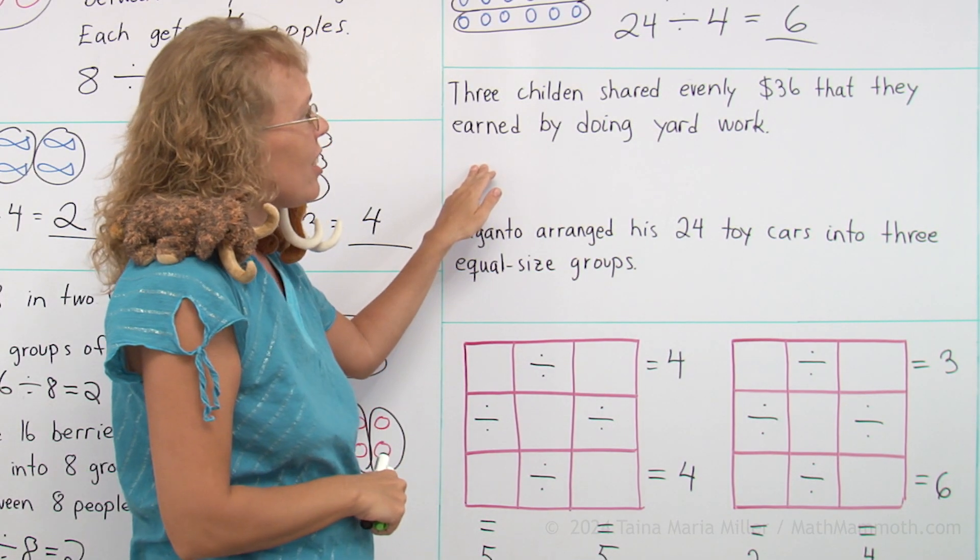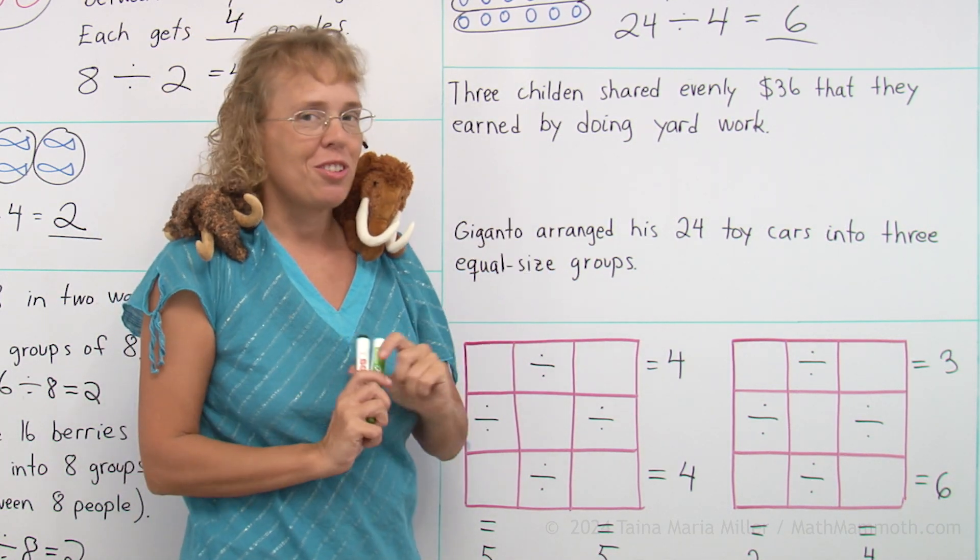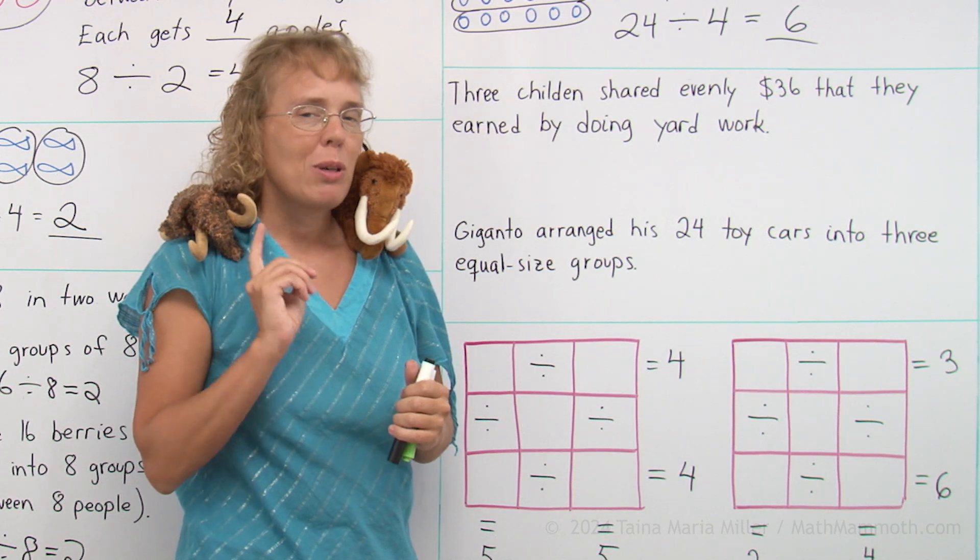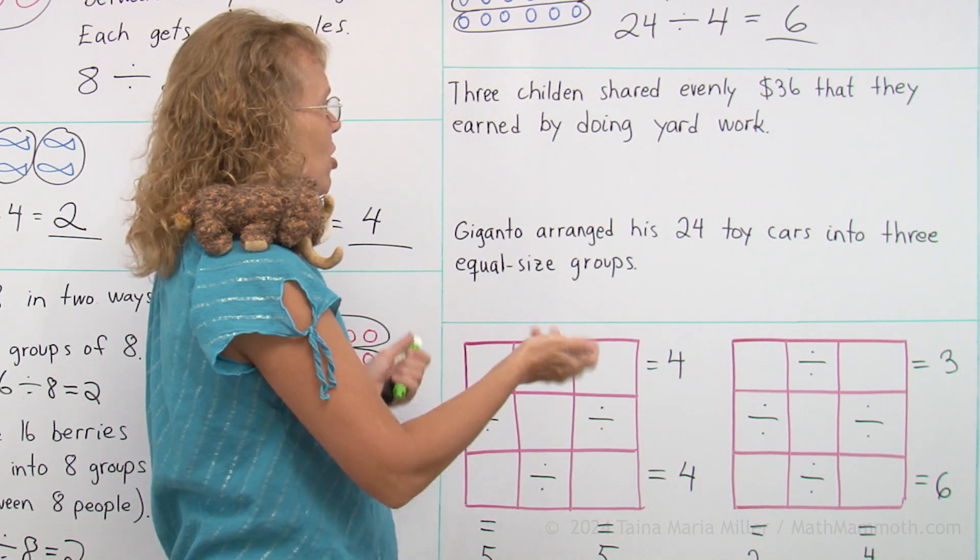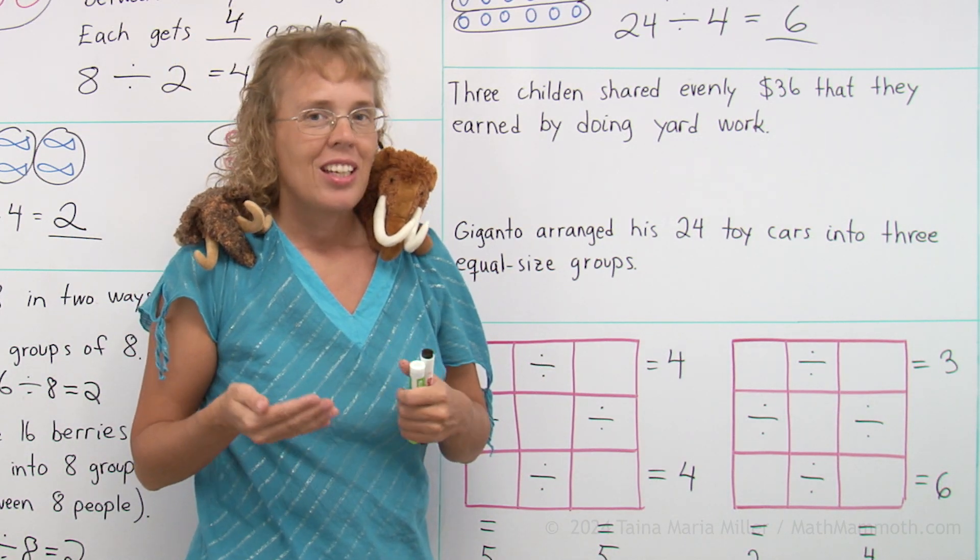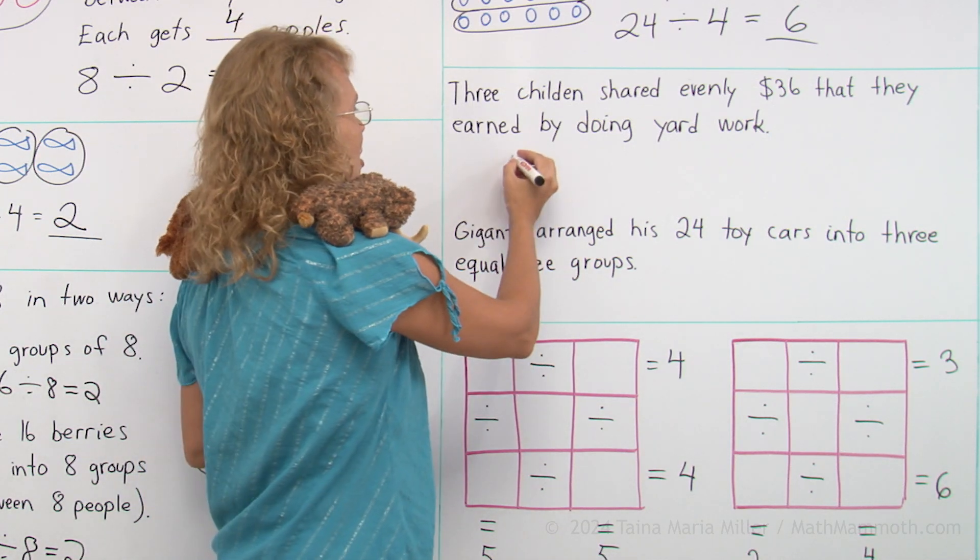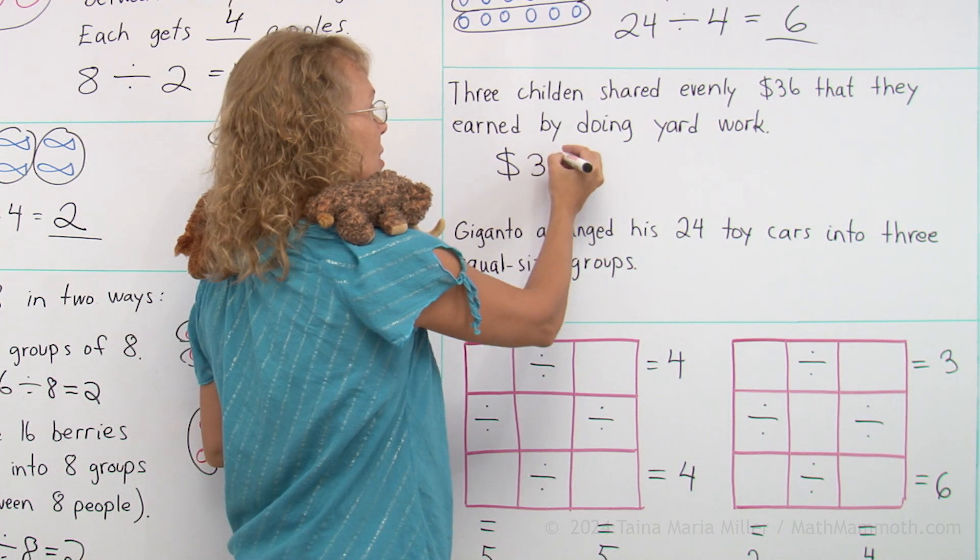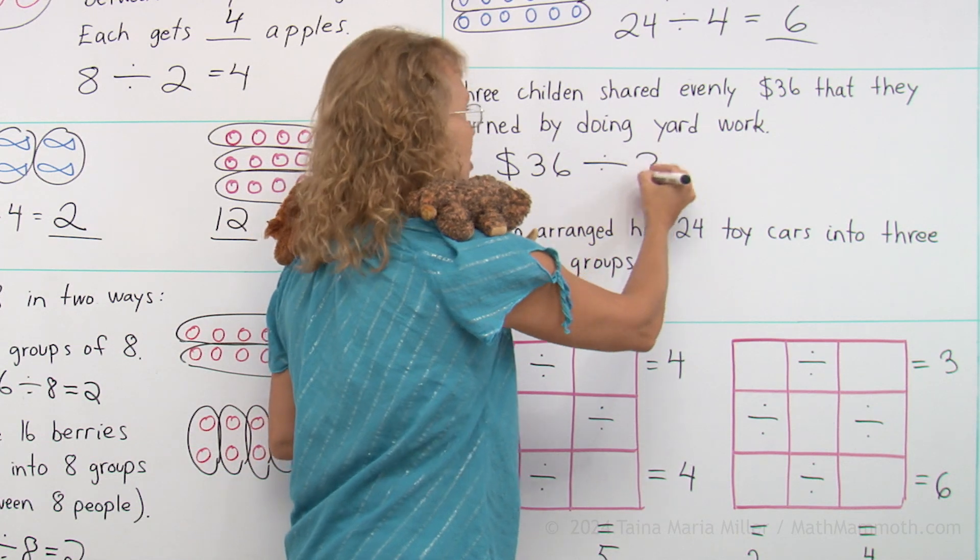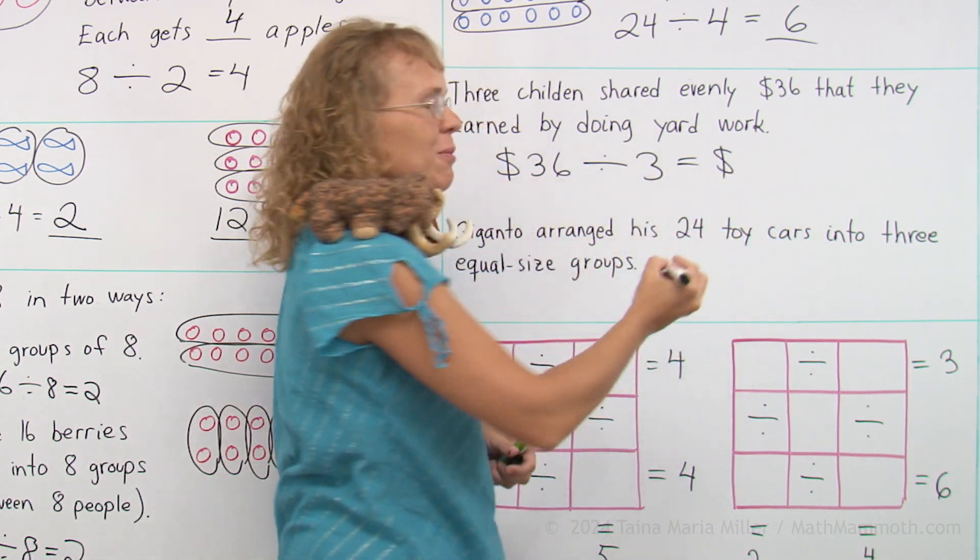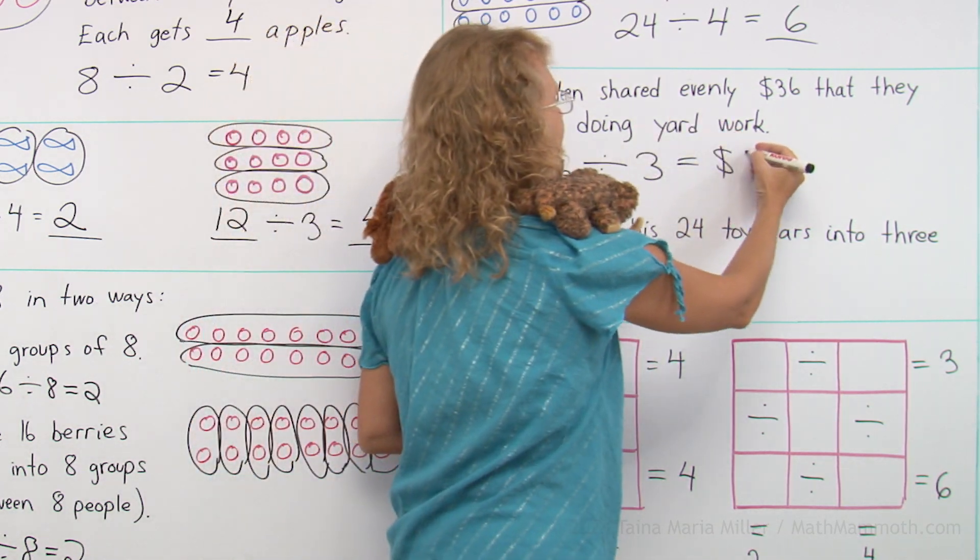3 children shared evenly $36 that they earned by doing yard work. But what would be the question? What would we ask in this situation? 3 children, they are sharing evenly $36. So how much would each child get? And we can write a division. 36 dollars when dividing it evenly between 3 children. And each child gets how much? Think of multiplication. What times 3 gives you 36? It is 12.